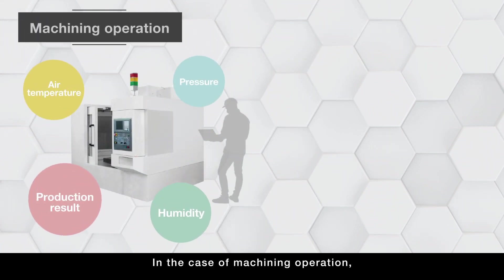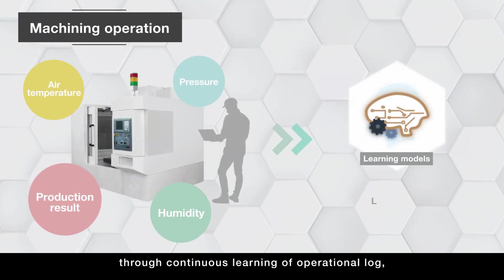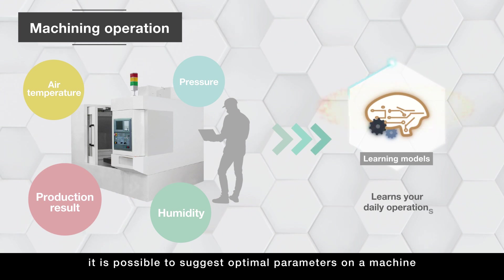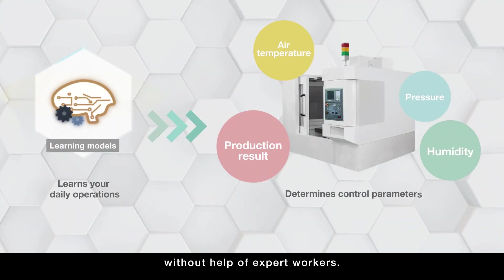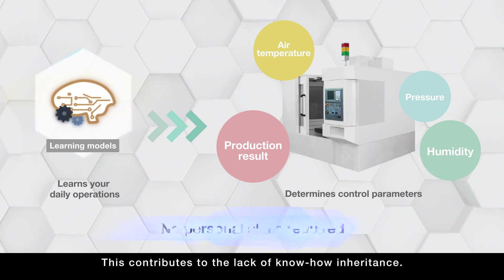In the case of machining operation, through continuous learning of operational log, it is possible to suggest optimal parameters on a machine without help of expert workers. This contributes to the lack of know-how inheritance.